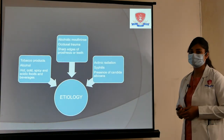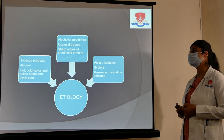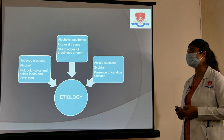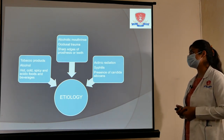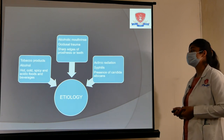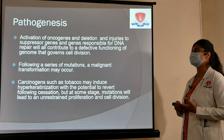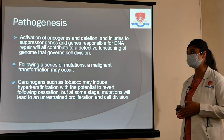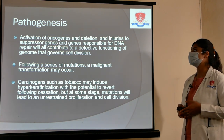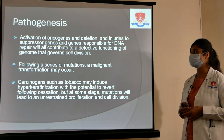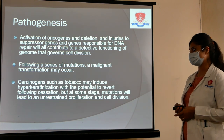Etiology behind leukoplakia includes tobacco products, alcohol, hot and spicy foods, cold acidic food and beverages, alcoholic mouth rinse, occlusal trauma, sharp edges of prosthesis or teeth, actinic radiation, syphilis, and presence of Candida albicans. The pathogenesis involves activation of oncogenes and deletion of tumor suppressor genes, along with impairment of genes responsible for DNA repair, contributing to defective genome function governing cell division.